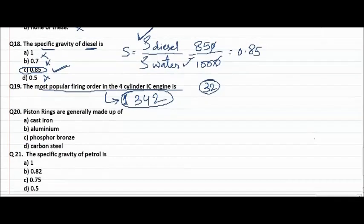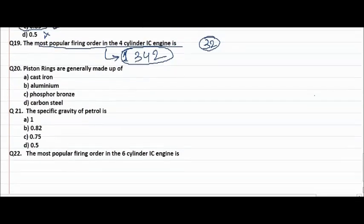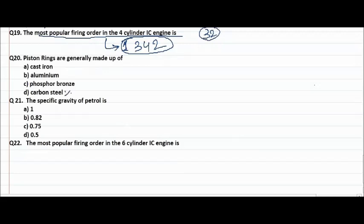Next question says piston rings are made up of carbon steel? No. Phosphor bronze, not an answer. Aluminum, no. Cast iron is the right answer. Piston rings are generally made up of cast iron.